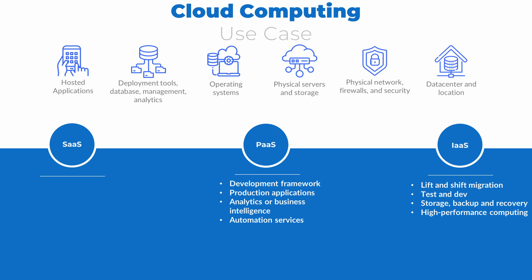PaaS is a good option to use as a development and production framework for a variety of services. There are PaaS platforms purpose-built to develop and run web-based applications. There are also analytics and business intelligence services, as well as automation services available as PaaS offerings. As a comparison, we could deploy a bunch of IaaS servers to run a web application, but it may be easier and cheaper to use a web PaaS service instead. Finally, SaaS includes readily available services such as email, collaboration software such as Teams, customer relationship management, enterprise management, and document management platforms. These are all ready-to-use applications, typically billed per user.